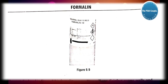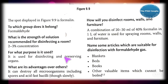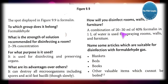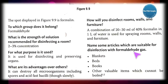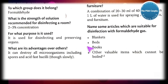Last is formalin — the same one used in anatomy. It belongs to the formaldehyde group. Strength of solution: 2 to 3 percent concentration. Uses: disinfecting and preserving organs. Advantage: it can destroy all microorganisms including spores and acid-fast bacilli, though slowly. To disinfect room walls and furniture, a combination of 20 to 30 ml of 40% formalin in one liter of water is used for spraying. Articles suitable for disinfection with formaldehyde gas include blankets, beds, books, and other valuable items which cannot be boiled.